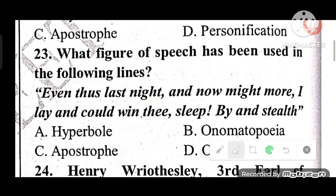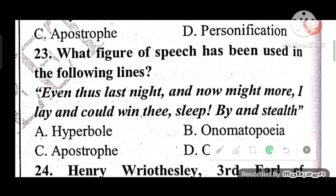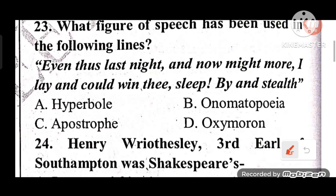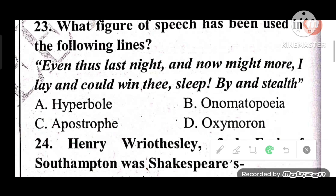Question 23: What figure of speech is used in 'Even thus last night, and thus tonight I lay, and could not win thee, Sleep'? Options: A) Hyperbole, B) Onomatopoeia, C) Apostrophe, D) Oxymoron. The answer is C — Apostrophe, as Sleep is being directly addressed.